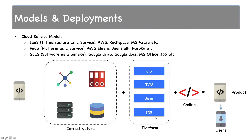Following the same process as the pizza analogy: you can choose to use infrastructure as a service — get the server and storage from someone else, then install your own OS, JVM, Java, and IDE, then code and create your product. Or you can use platform as a service, where the JVM, Java, IDE, and operating system come pre-installed — you just code and get your product. For end users, they don't care how the product was made or what database or server is used — for them it is software as a service.